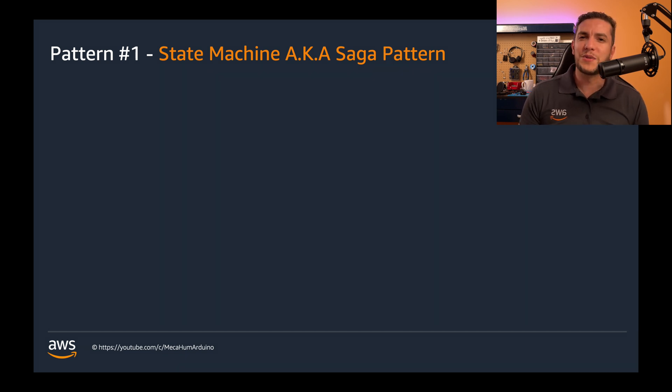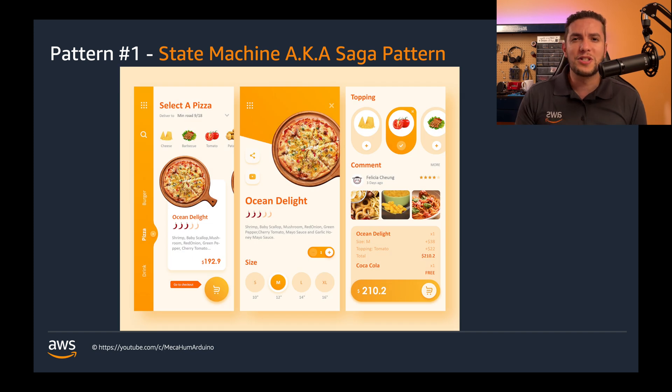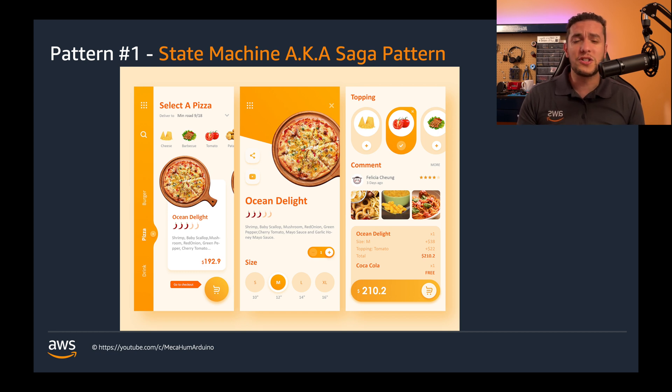Another example is ordering a pizza online. You start by choosing the size and then the crust, then you start adding toppings. But you might change your mind and go back and change the crust — go back to the first step. And maybe once you get to the final step, you remember an extra topping you want to add.